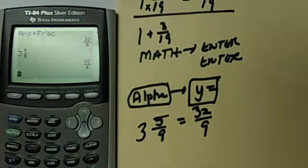So as you can see, either way is fairly easy to change your mixed number into an improper fraction using your TI graphing calculator.